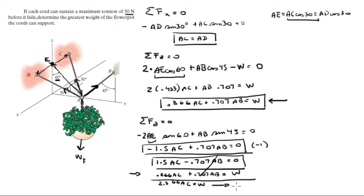And you get 2.366 AC is equal to W. Which means that AC is equal to 0.423 W. But you know that AC is equal to AD. Therefore, AD is also equal to 0.423 W.